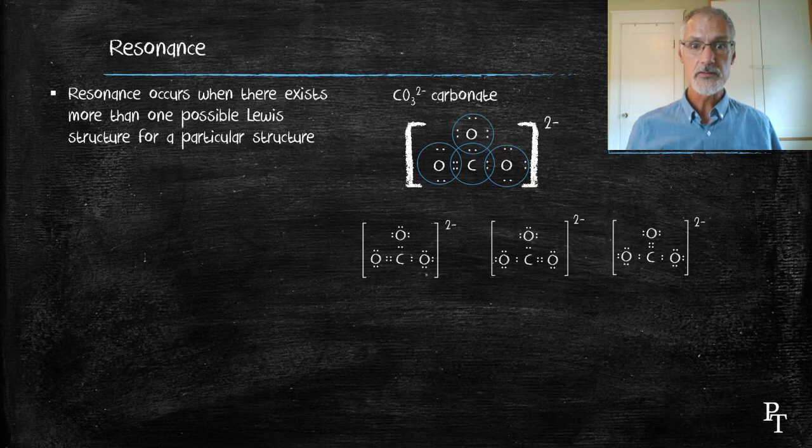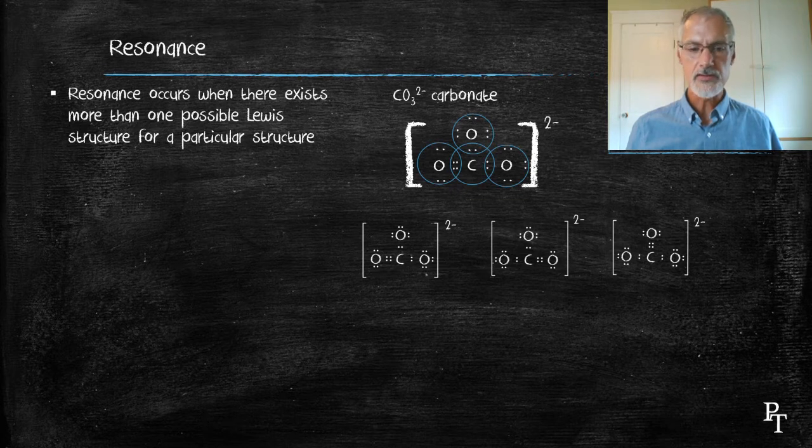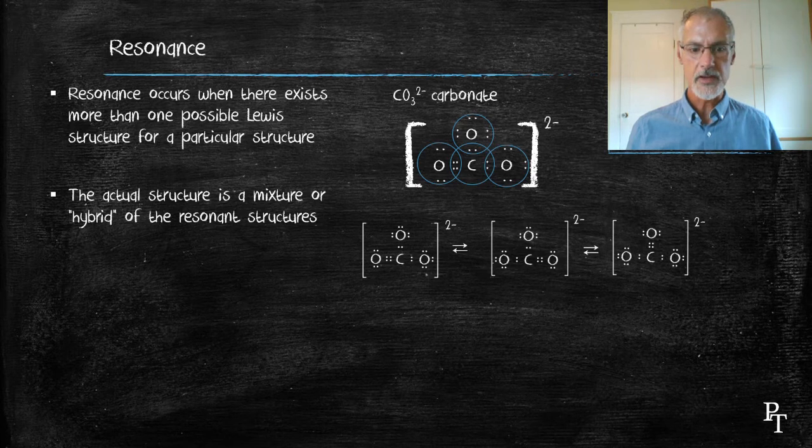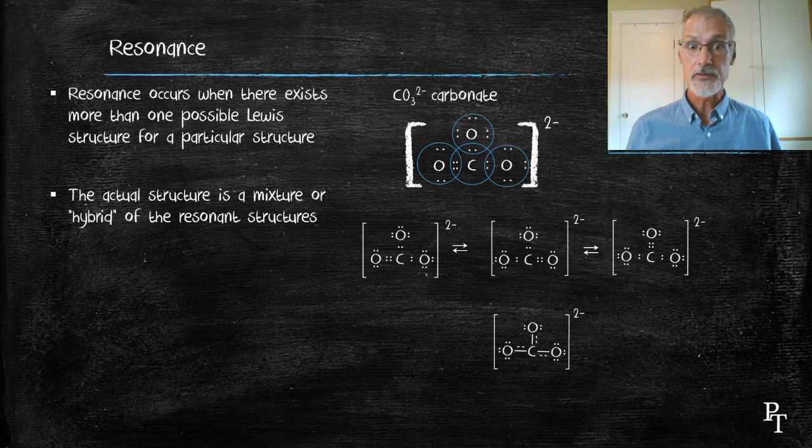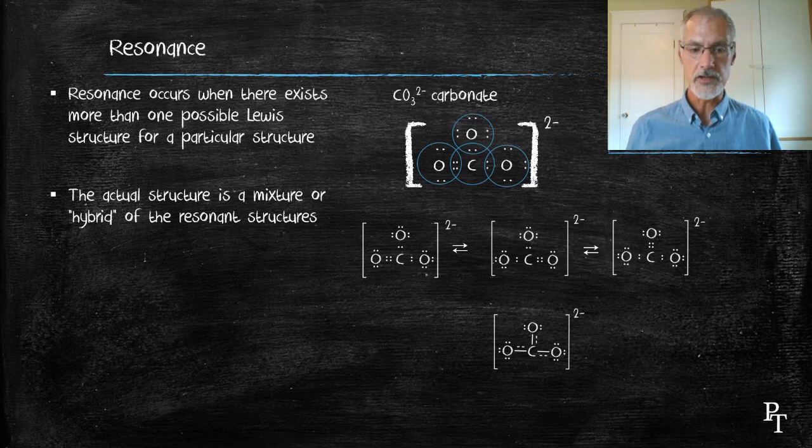Now, the actual structure of carbonate is a hybrid or mixture of these three structures interchanging between each other. Sometimes it's represented by this diagram, where we know there is always a single bond present, but there could be a double bond at any of those locations.